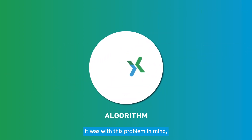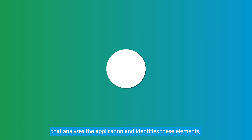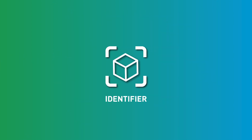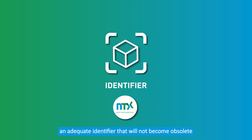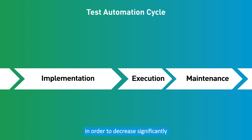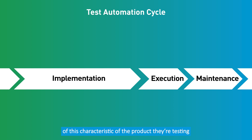It was with this problem in mind that the NTX team developed an algorithm that analyzes the application and identifies these elements before obtaining automatically an adequate identifier that will not become obsolete after each new build of the application, in order to decrease significantly the necessity of maintenance in these tests — all of this without the need for the user to be aware of this characteristic of the product they're testing.